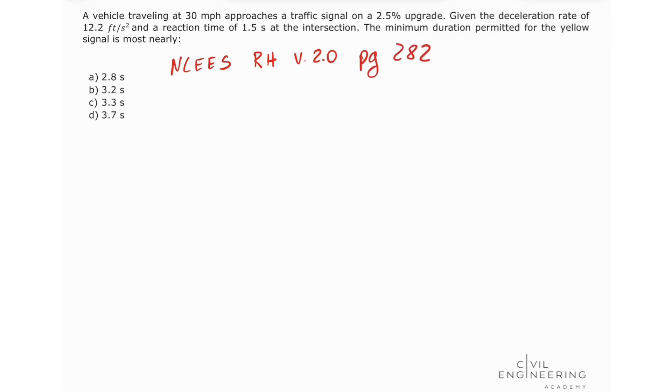So here we have an upgrade of 2.5% and we have a vehicle traveling at a speed of 30 miles per hour. On page 282, we're going to see the equation for the yellow change interval.